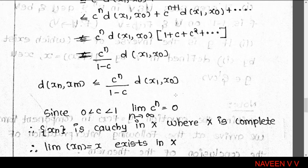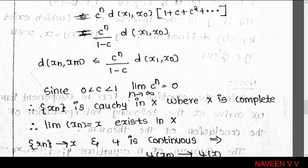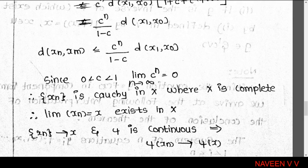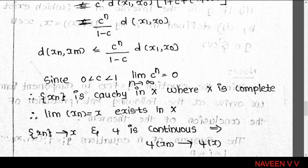Since c is in the open interval (0,1), |c| < 1, so as n tends to infinity, c^n tends to 0. Therefore the limit as n, m tend to infinity of d(x_n, x_m) = 0. Hence for every ε > 0, we can find a positive integer N such that for all n, m greater than N, d(x_n, x_m) < ε.